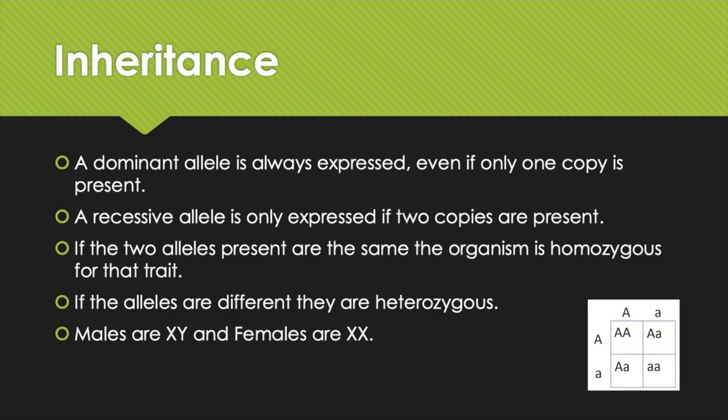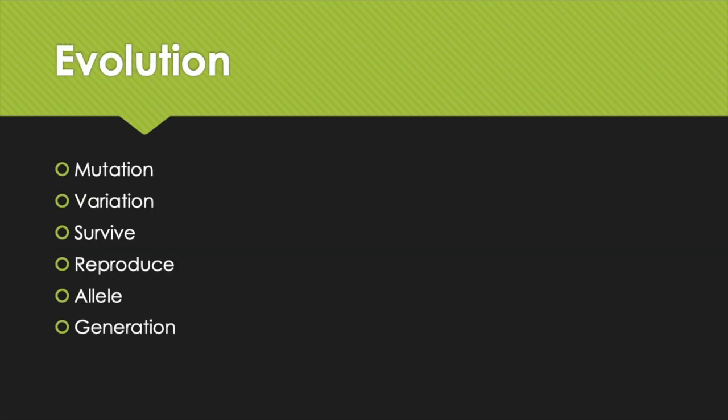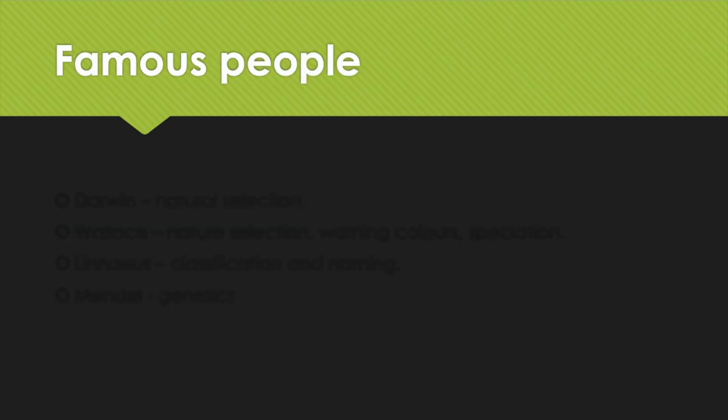Males are XY, females are XX. The picture at the bottom right is called a Punnett square — you need to be able to draw one. For evolution, these are your key words: mutations happen randomly and increase variation in a population; individuals with favorable variations are more likely to survive and reproduce, and pass on the allele or gene for that favorable variation to the next generation.